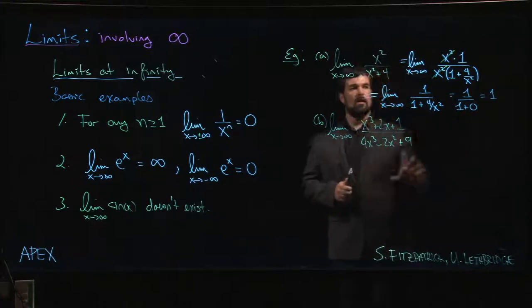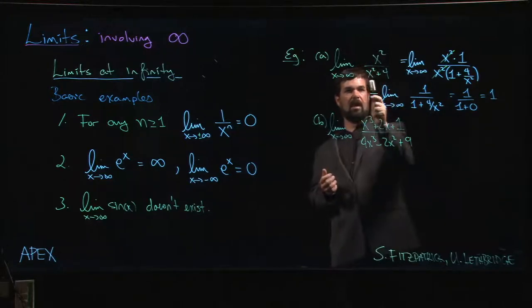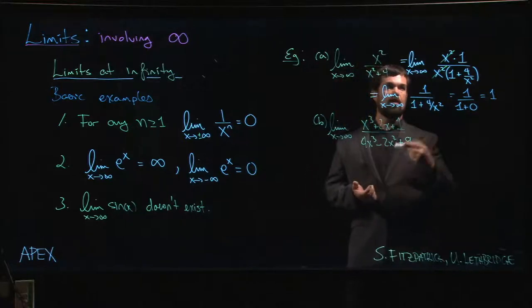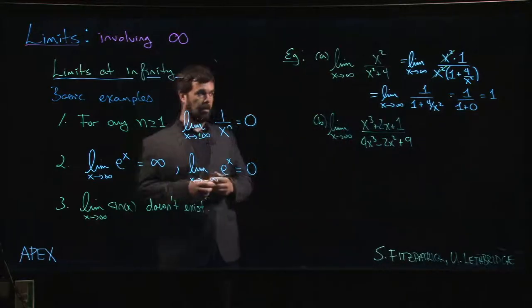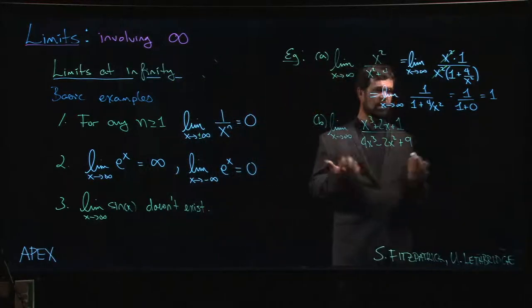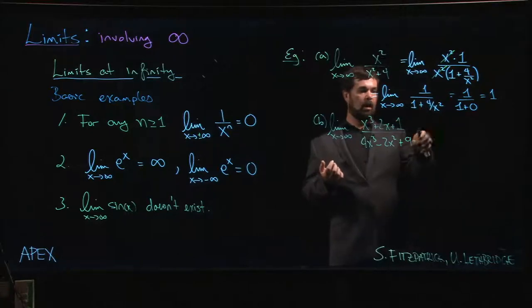If you don't like this factoring out x step, if you find it hard to think about factoring an x squared out when there isn't an x squared in one of the terms, you could also think about just dividing top and bottom by x squared, or if you like, multiplying top and bottom by one over x squared. However you want to think about that step, the result is still going to be the same.